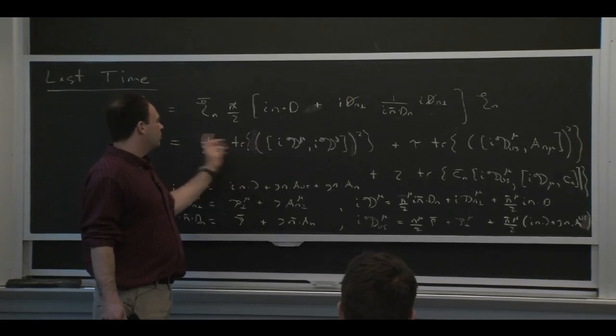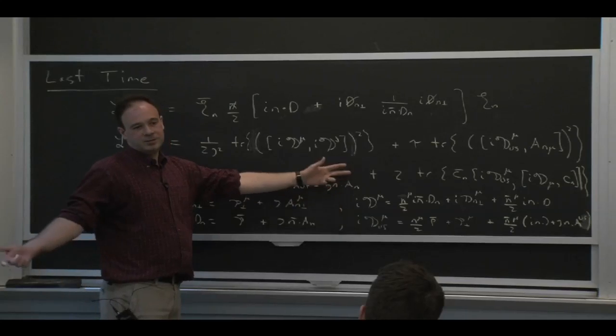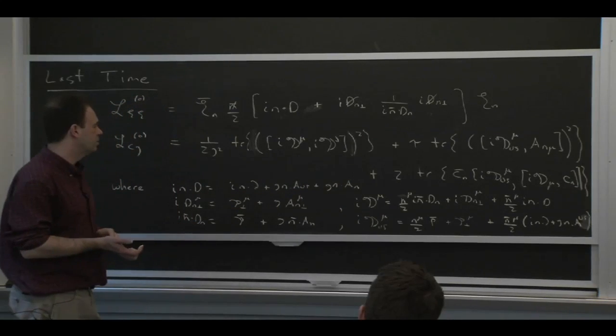If you wrote the original Lagrangian as a commutator of two covariant derivatives, you just replace it by the leading order pieces. That's what the leading order action will be.